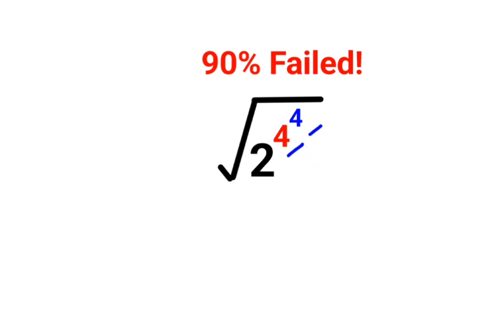Now see, when you have something like this, 2 raised to 4 raised to 4, please understand this is not equal to 2 raised to 4 the whole raised to 4. If that was the case then the brackets would have been given, but since the brackets were not there in the question, so definitely this is not going to be our method to approach.